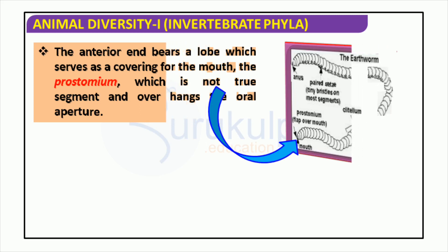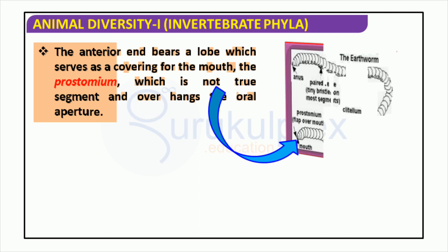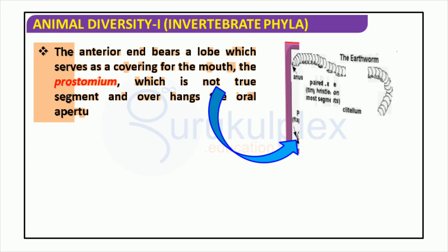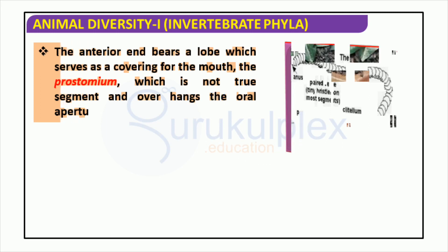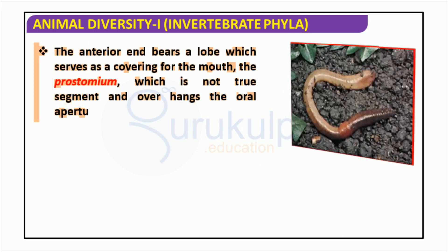Earthworms are important members of our natural ecosystems. They help create compost, aerate soil, and transport nutrients and minerals between layers of soil. Additionally, earthworms feed on organic matter, creating a nutrient-rich fertilizer for plants.